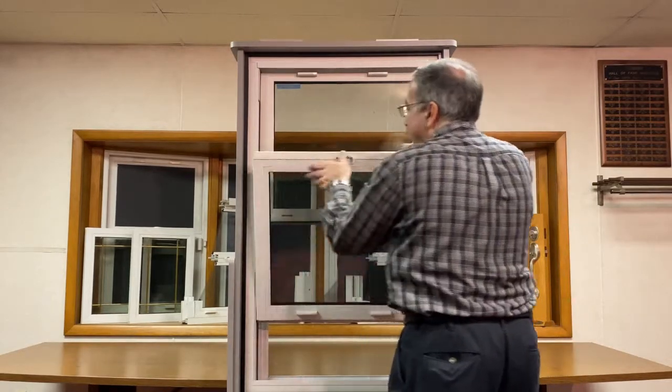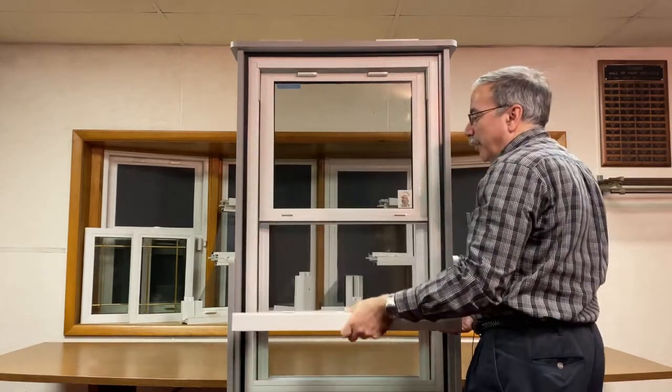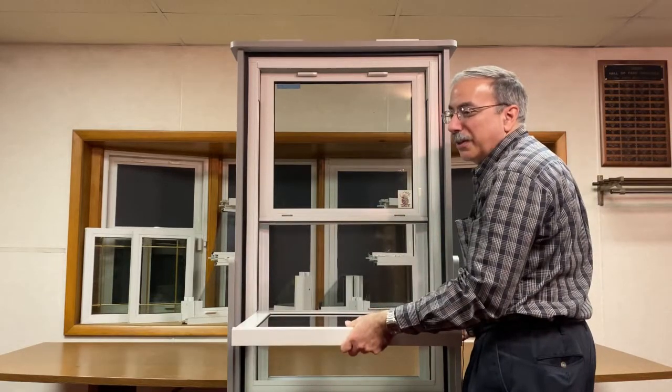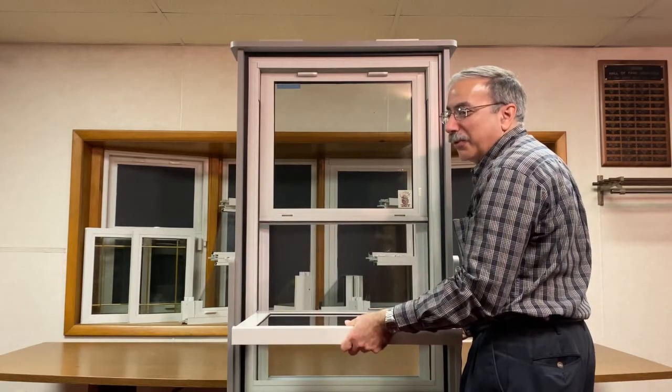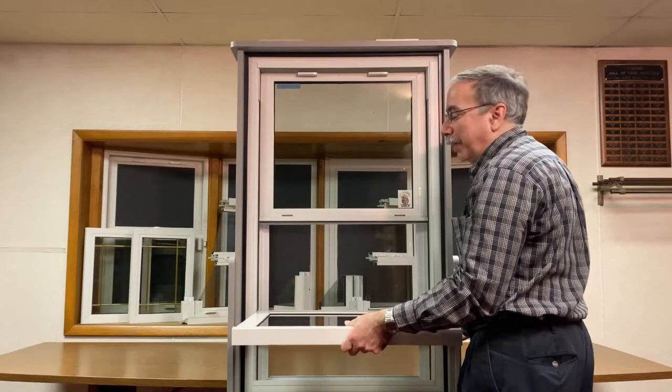You will then tilt the sash in to the tilt in position so that the sash is perpendicular to the master frame at about a 90 degree angle.